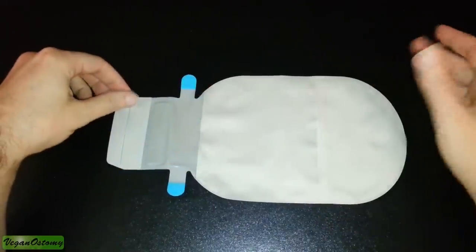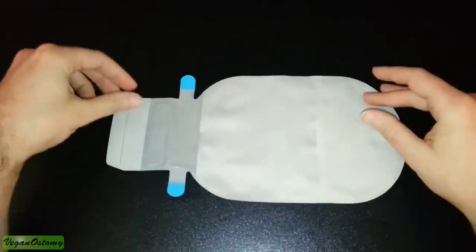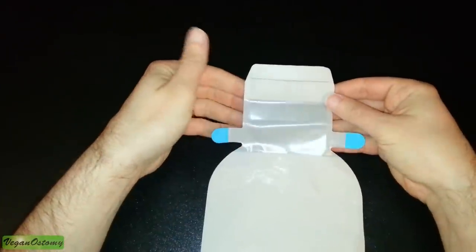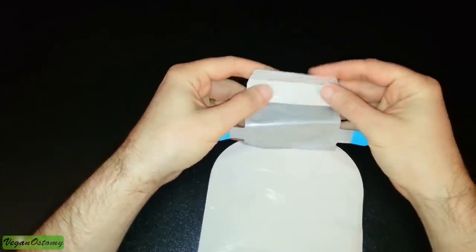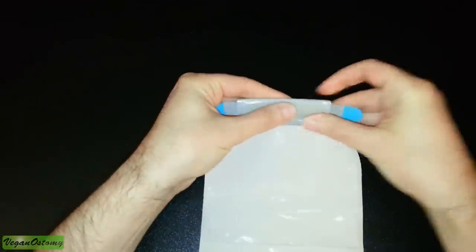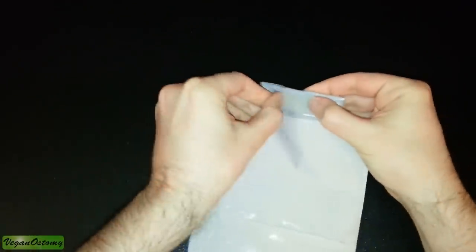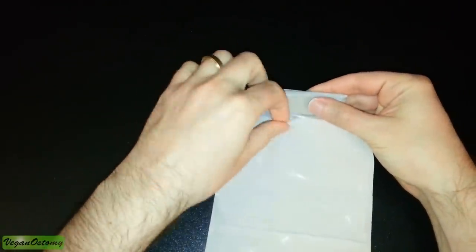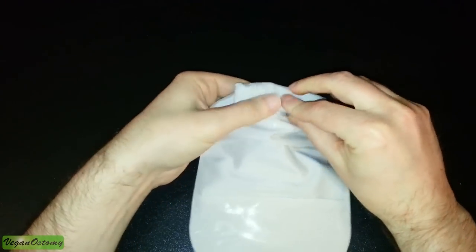Now if you aren't aware, Coloplast tends to use velcro closures and you basically roll it up and it's secured with velcro, and then you just basically hide it away.